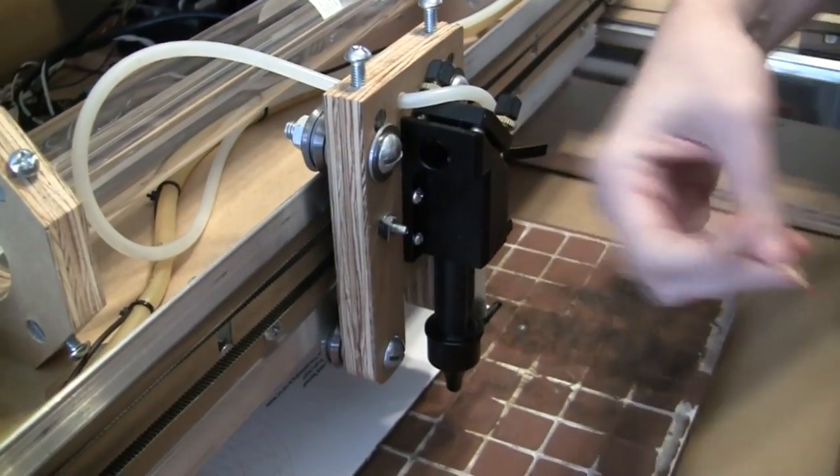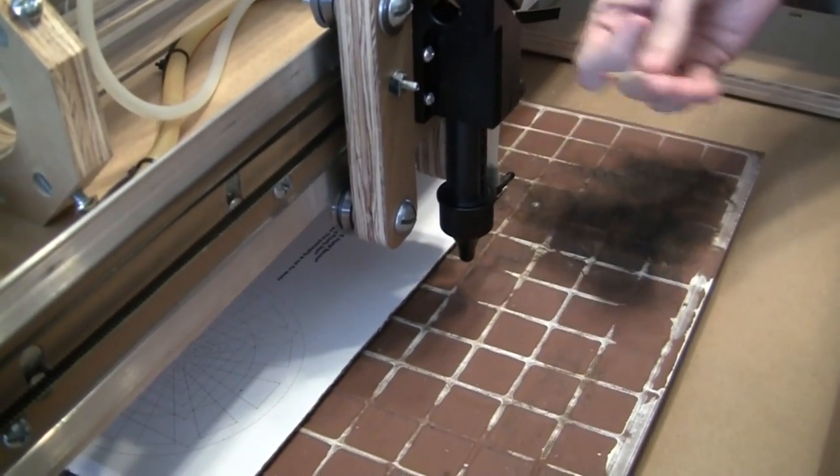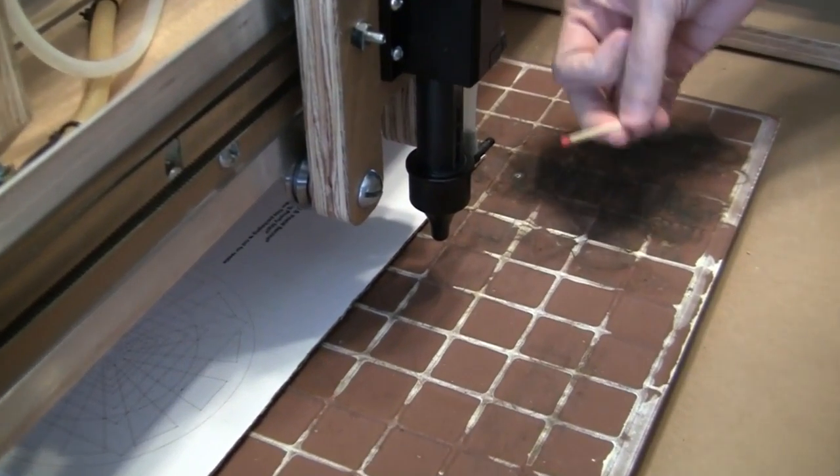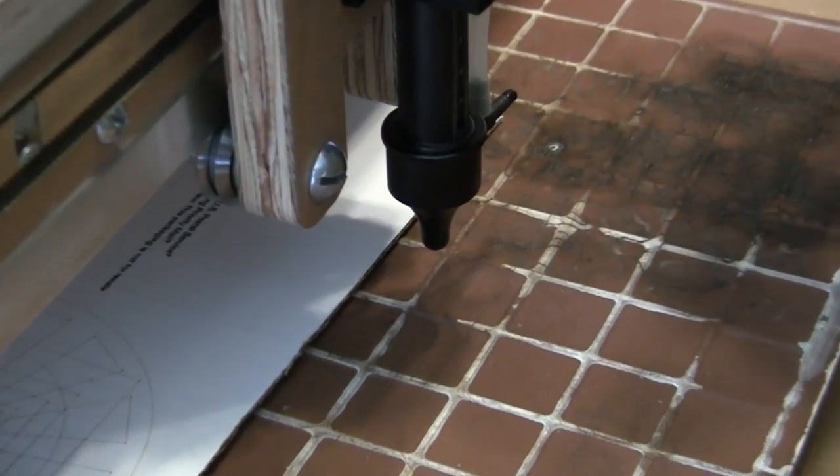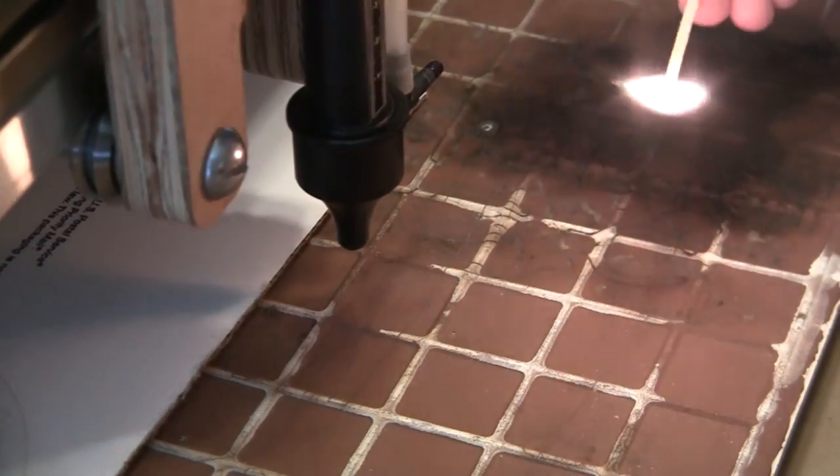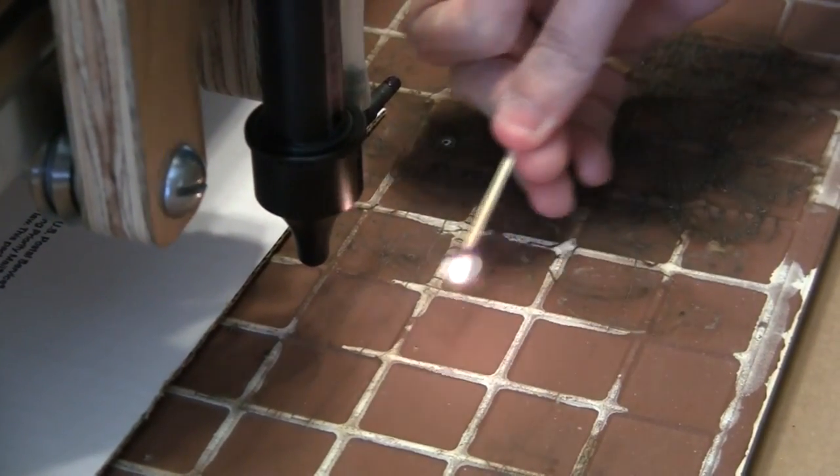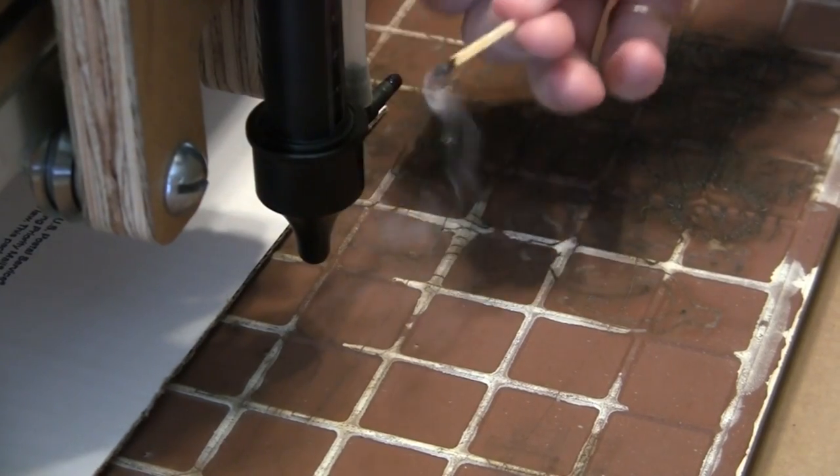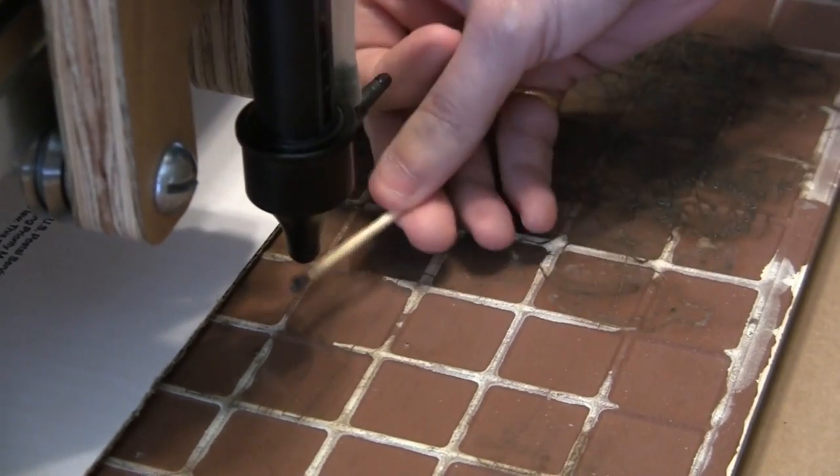All right, now we're going to take an ordinary match and we're going to put it underneath that. It's not a huge flame, but we'll see how quickly it does extinguish the flame. Let's get a pretty good flame going here. It's completely extinguished right when I put it underneath the nozzle.